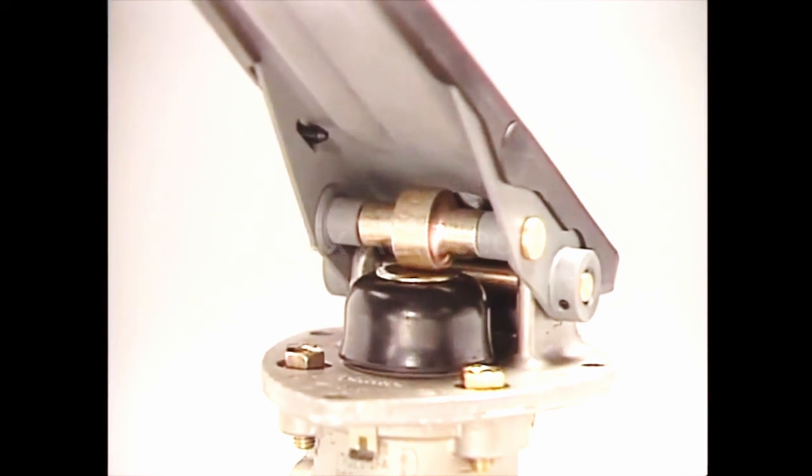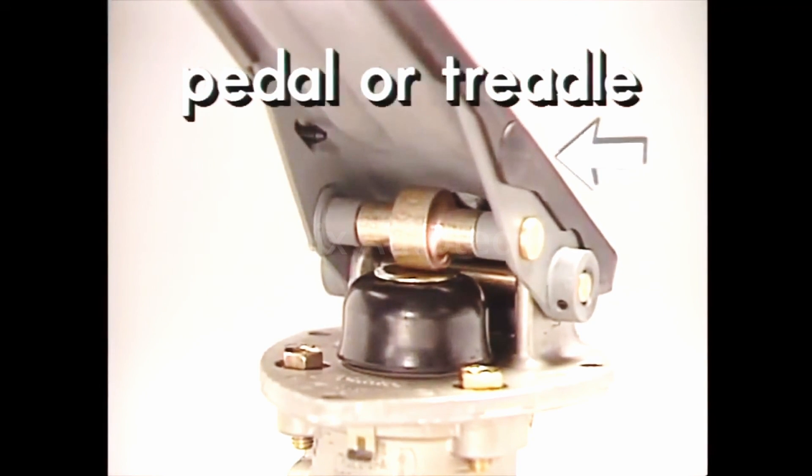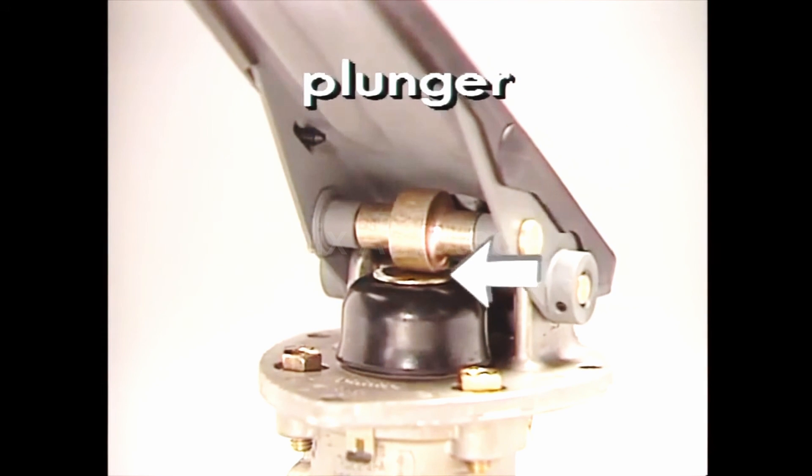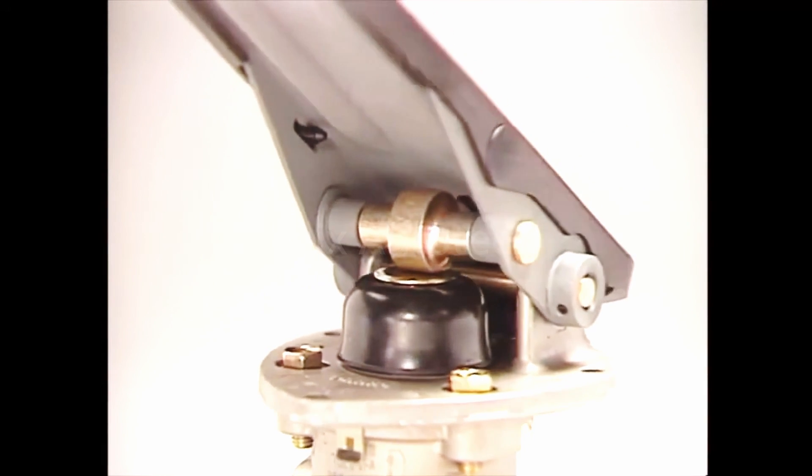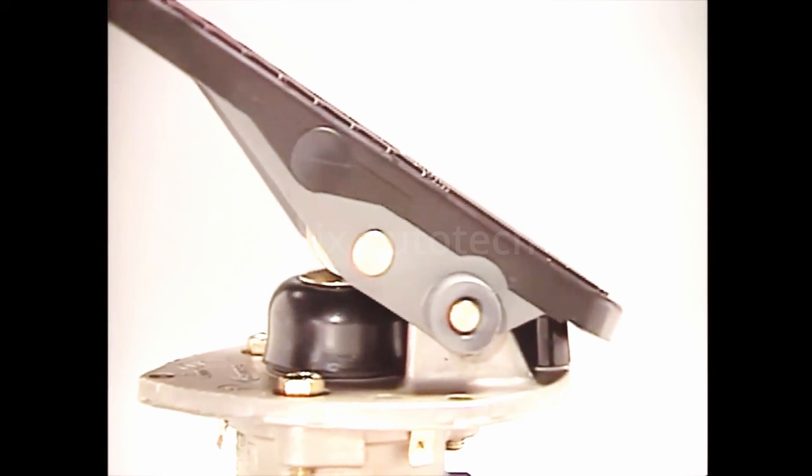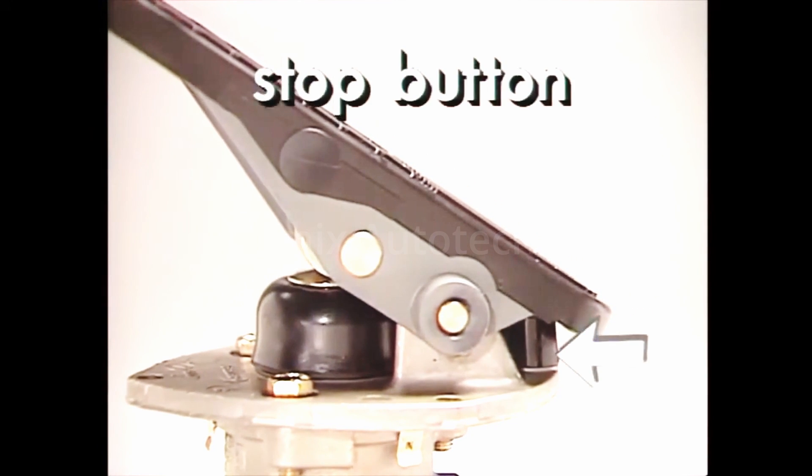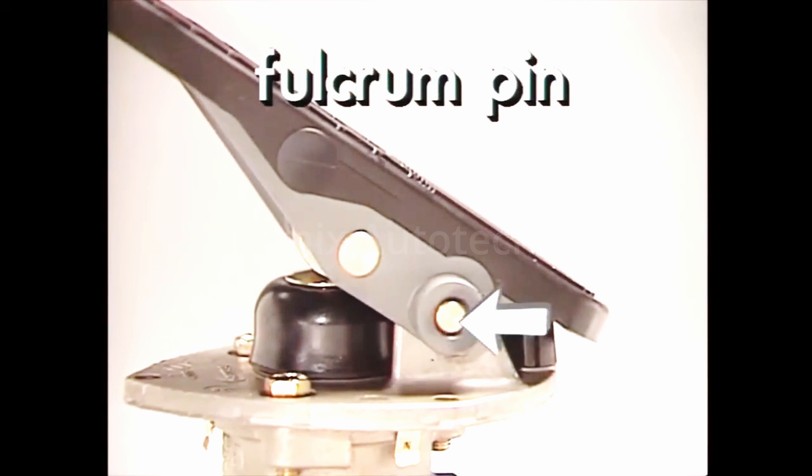The actuation components of the E6: pedal or treadle, plunger, roller, stop button, boot, and fulcrum pin, are interchangeable with other brake valves.